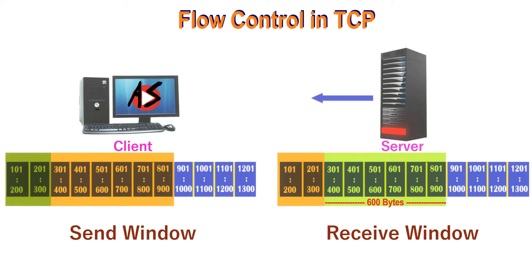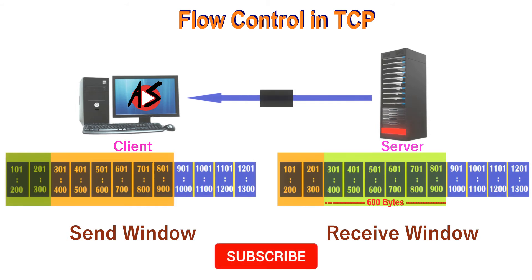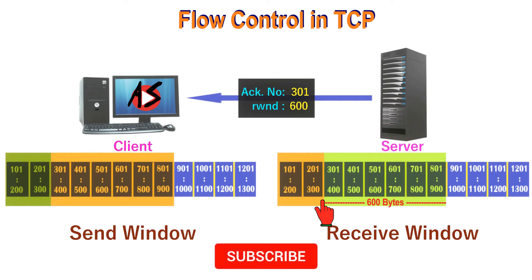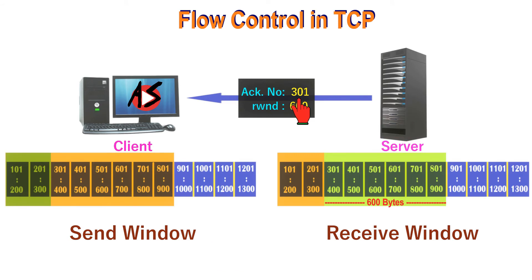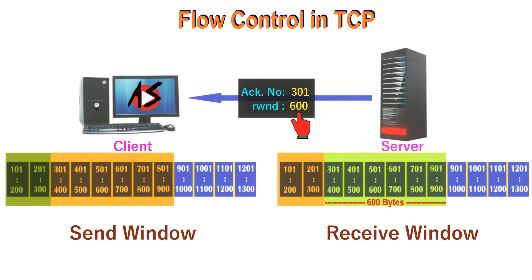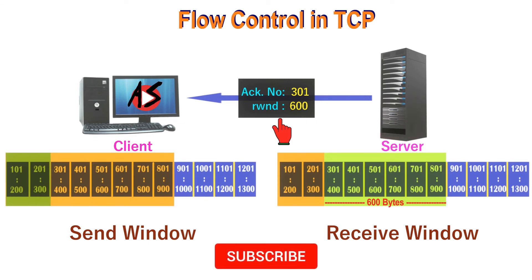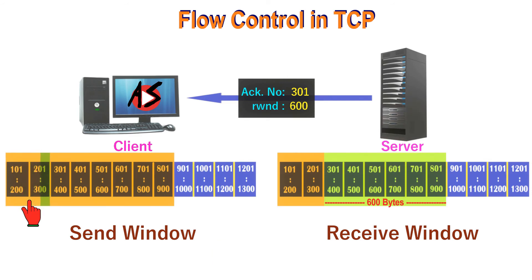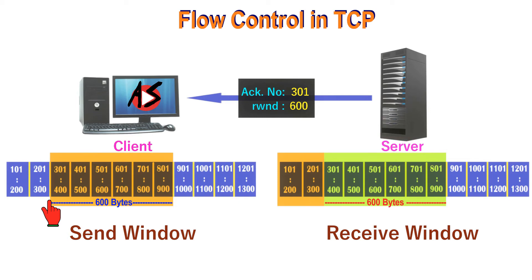The fifth segment is feedback from the server to the client. The server acknowledges bytes up to 300 and sets acknowledgement number to 301. The segment also carries the receive window size, which has decreased to 600 bytes. After receiving this, the client purges acknowledged bytes from its window and closes its window to show the next byte to send is 301. The window size decreases to 600 bytes, and although the buffer can store 800 bytes, the window cannot expand its right wall because the receiver does not allow it.